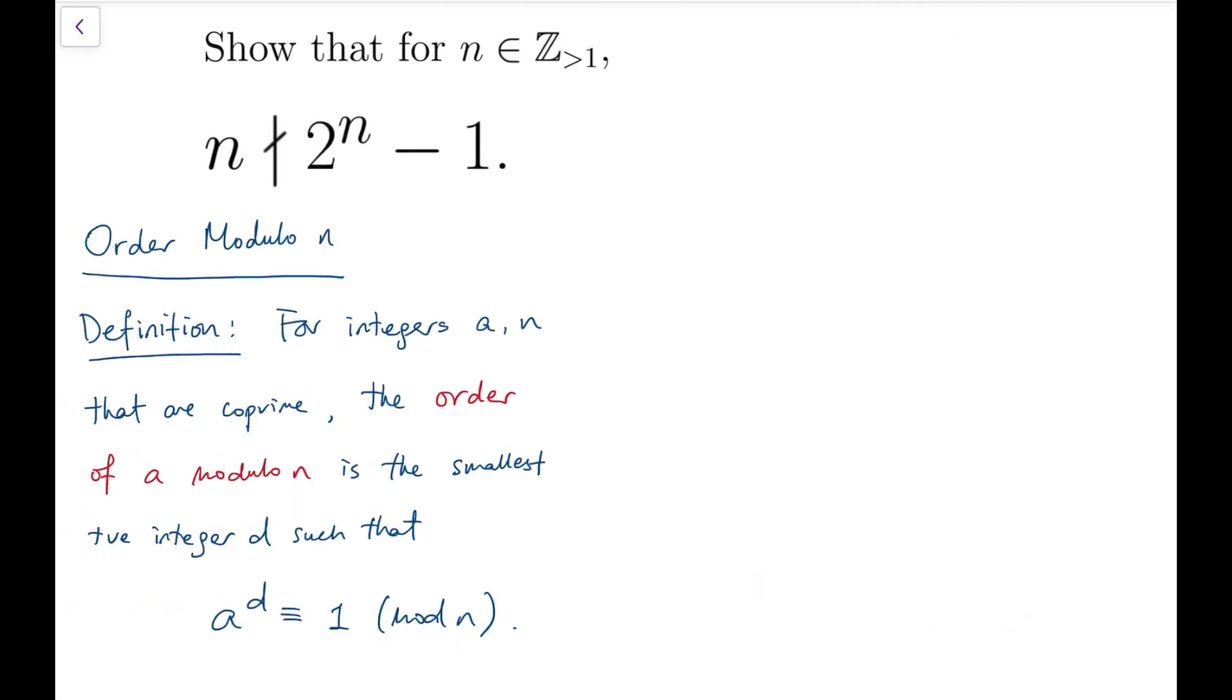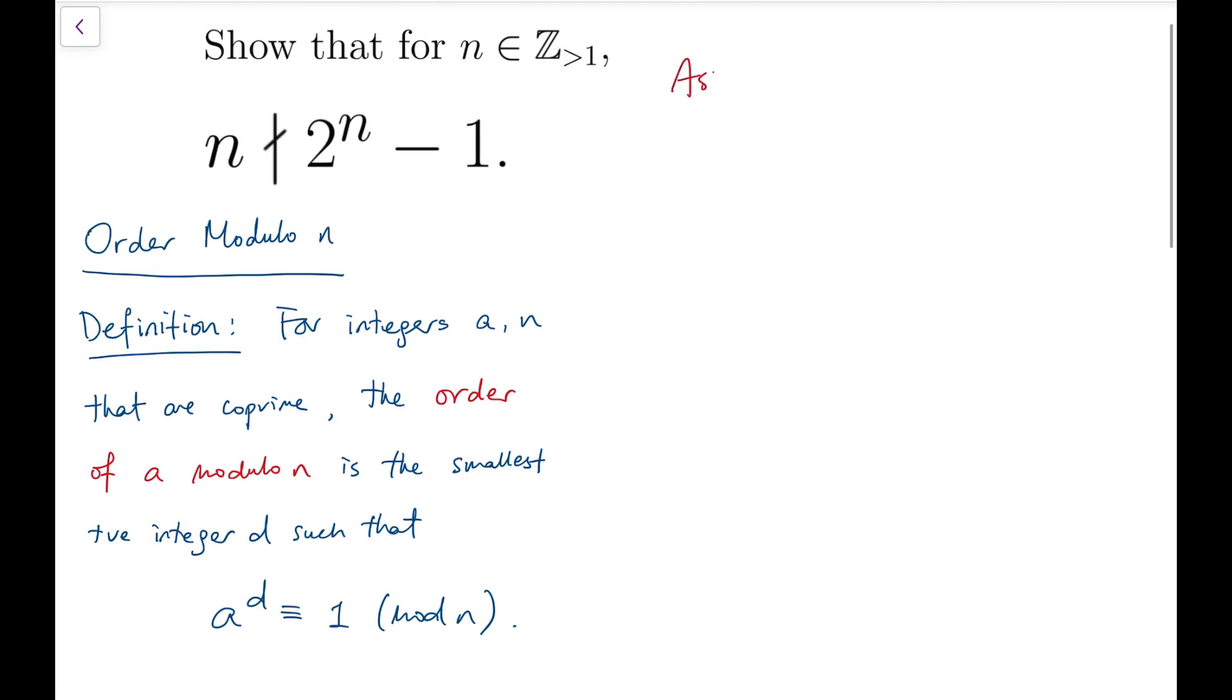So to start our proof, we first assume the contrary, which means that we assume there is really a natural number n that is larger than 1, and this n divides 2 to the power n minus 1.